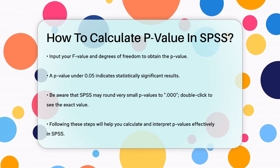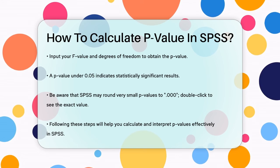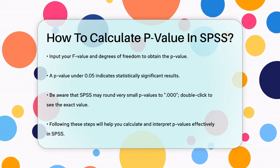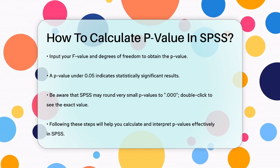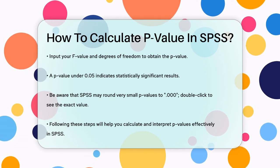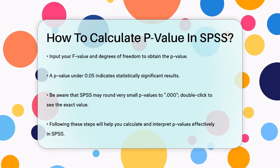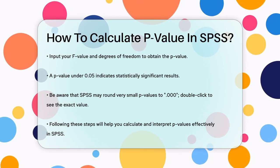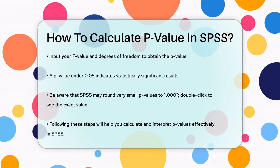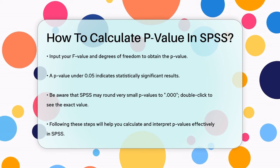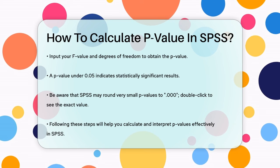Remember, SPSS can round very small p-values to .000, so if you see this, double-click on the p-value to see the exact number. By following these steps, you'll be able to calculate and interpret p-values in SPSS with ease, helping you make informed decisions about your research hypotheses.